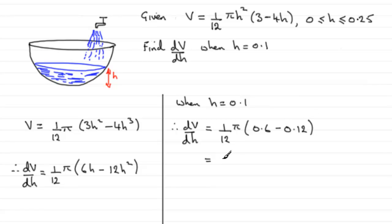If we work this out, 0.6 minus 0.12 is going to be 0.48. So you've got (1/12)π multiplied by 0.48. And this comes to, in fact, 0.04π.